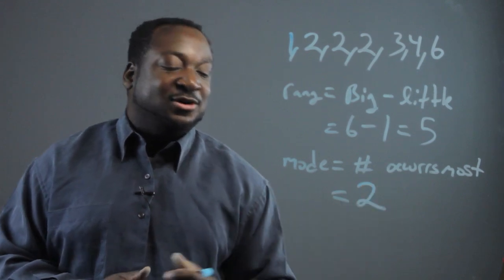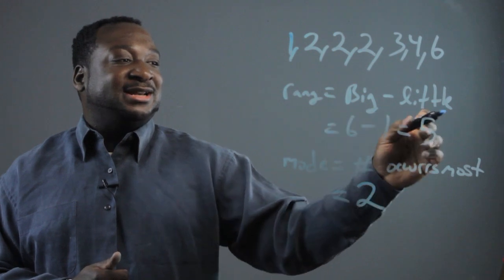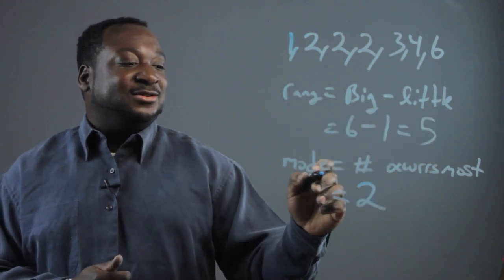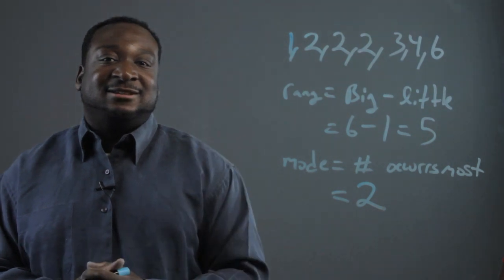And that's the mode. And there you have it. For the range, you take the biggest number minus the littlest, and the mode is the most occurred number. And that's how you get the mode and range.